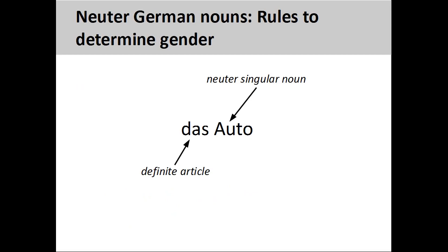A noun that has neither a masculine or feminine gender is neuter. The German noun 'auto,' meaning 'car,' has a neuter grammatical gender, so its definite article is 'das.' Don't forget that it is important to memorize the definite article with the noun. Although the grammatical gender of German nouns is sometimes difficult to determine, there are some rules that can help you.